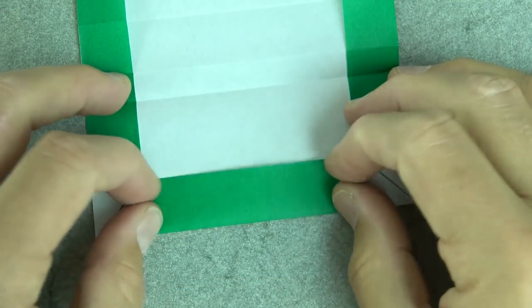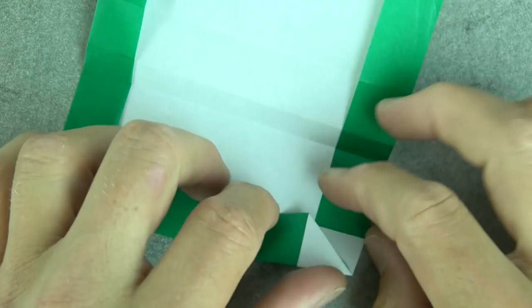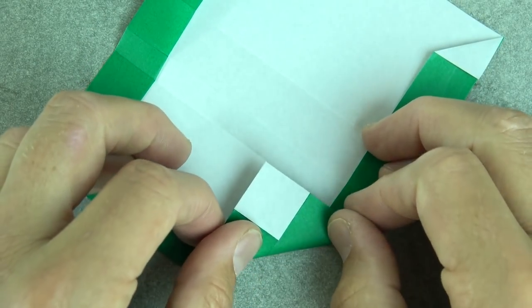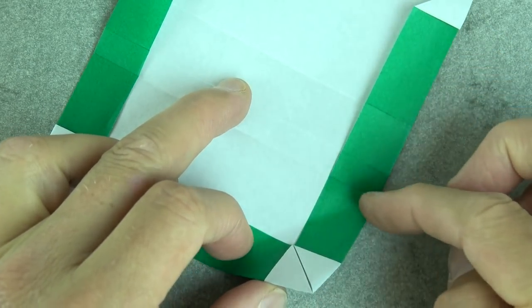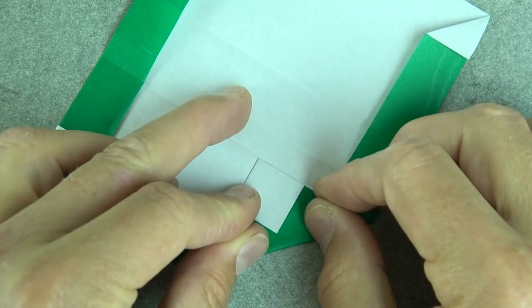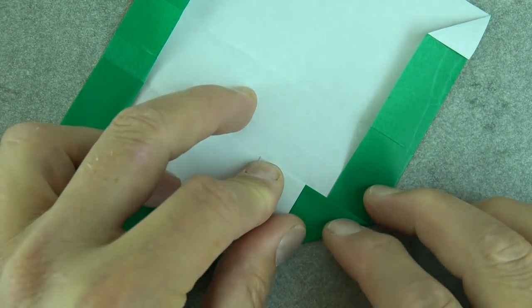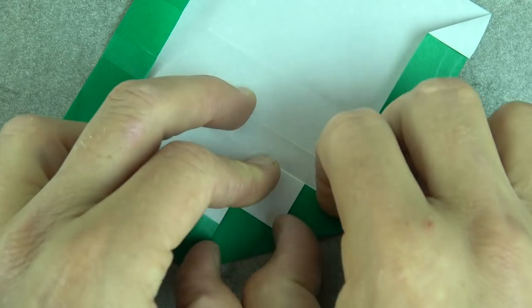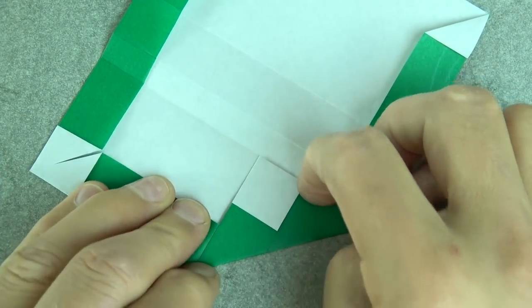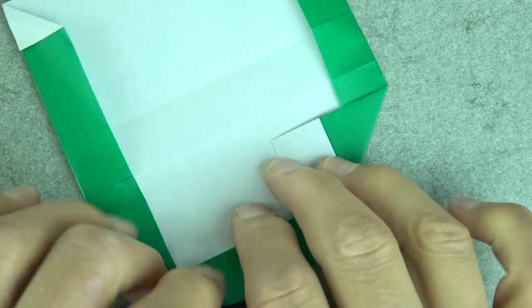And fold this up again. And now fold this flap up so that this edge aligns with this crease. And repeat on this side.